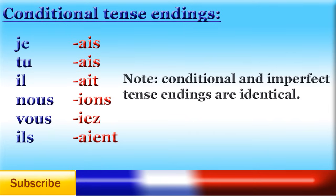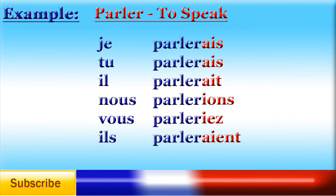As you can see, the conditional tense endings are identical to the imperfect tense endings. For example, 'parler' — to speak: 'je parlerais' — I would speak; 'tu parlerais' — you would speak.